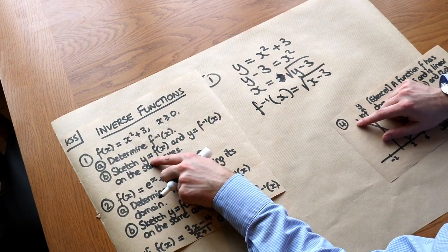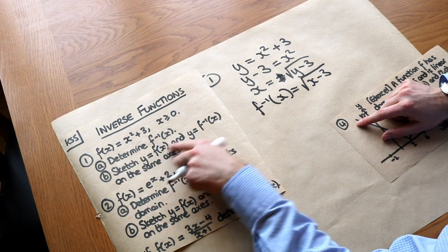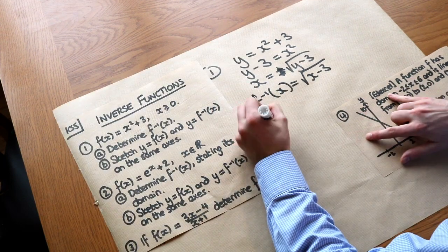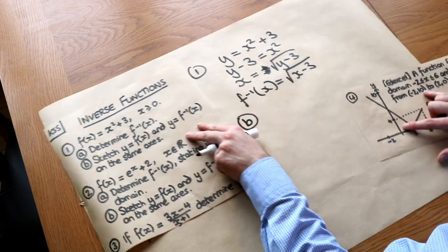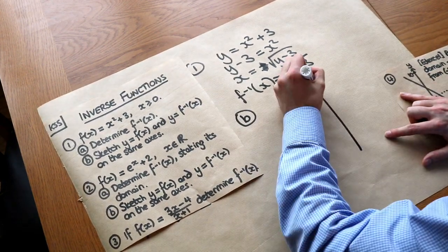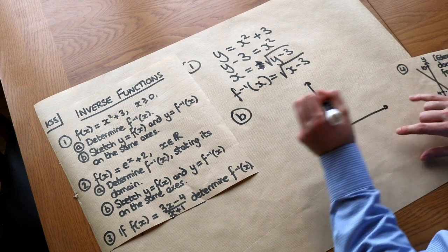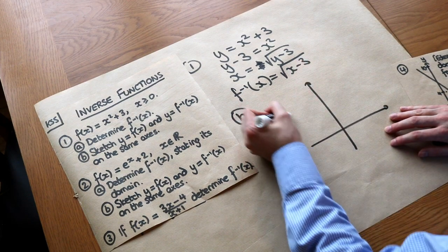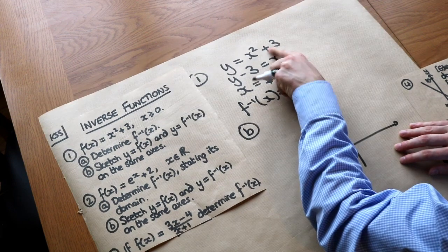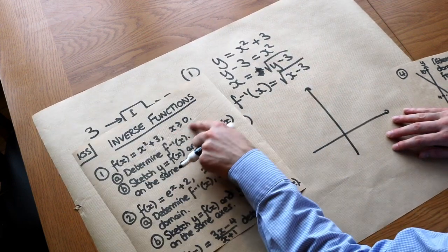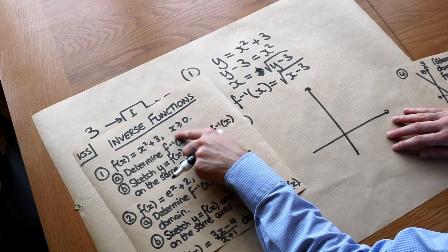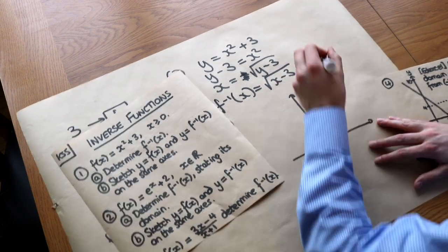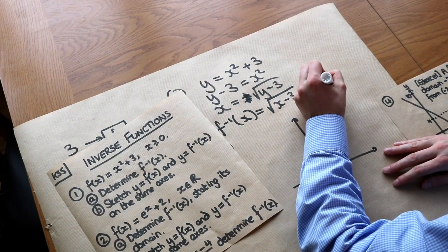Part b asks us to sketch the original function y = f(x) and y = f⁻¹(x) on the same axes and see what happens. If we sketch x² + 3, it looks like a standard y = x² parabola shifted up by 3. But since x must be non-negative — zero or more — we only draw this half of the graph.